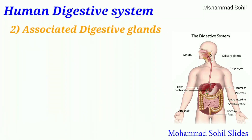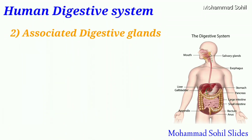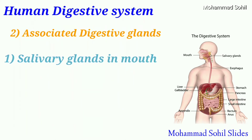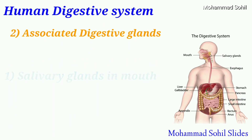Now coming to the second part, the associated digestive glands. The digestive glands associated with the alimentary canal are as follows. First, the salivary glands in the mouth. The salivary glands secrete saliva containing an enzyme called salivary amylase, which helps in the partial digestion of starch into the sugar maltose.